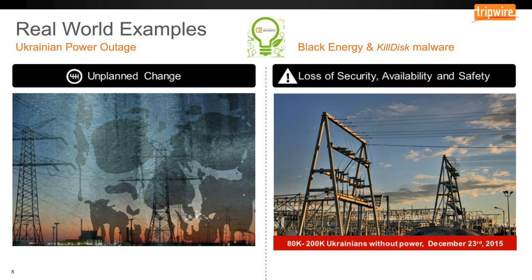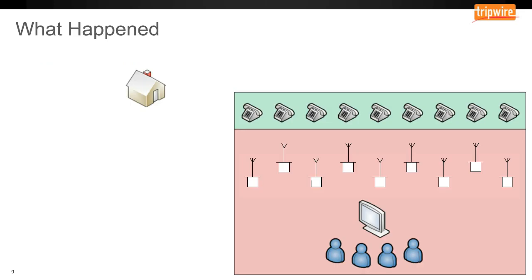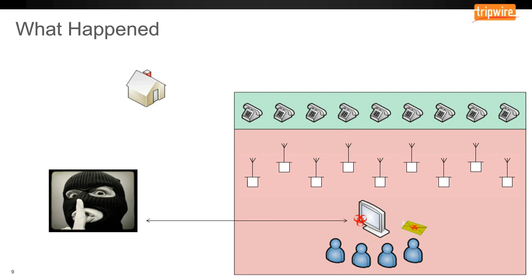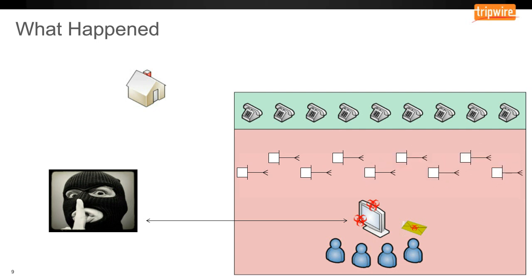In March 2015, the attackers started a spear phishing campaign targeting the engineers within the control system — going against actual internal employees rather than a third-party user. Once they gained a foothold, they installed a piece of malware called Black Energy 3, which was the command and control system. They also installed Kill Disk, which allowed them to wipe over everything, and installed a remote access Trojan as well.